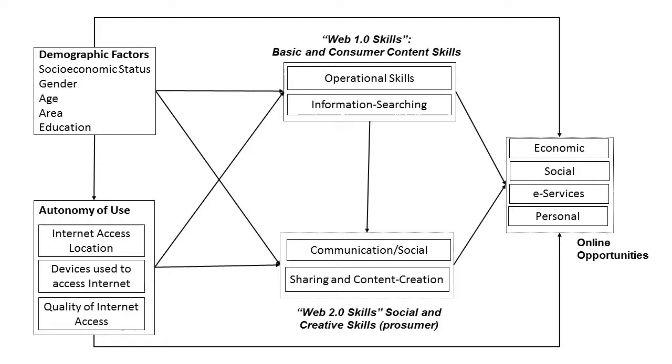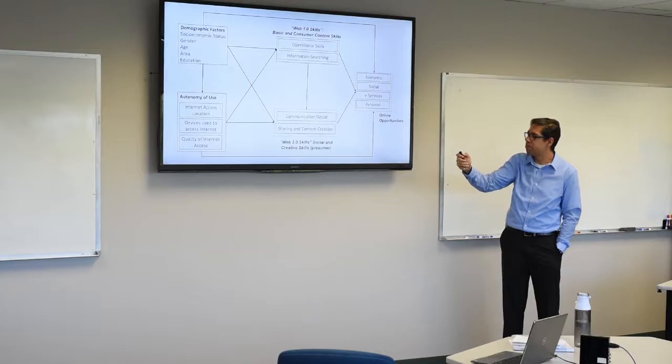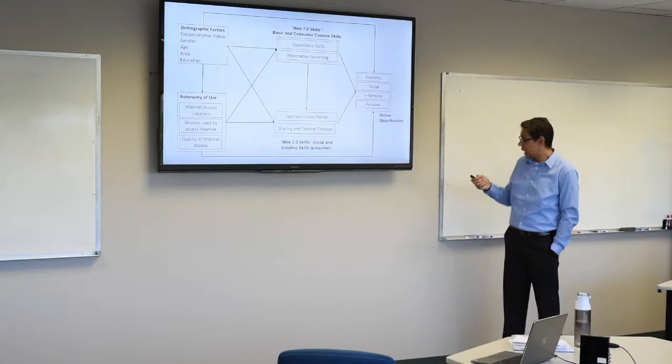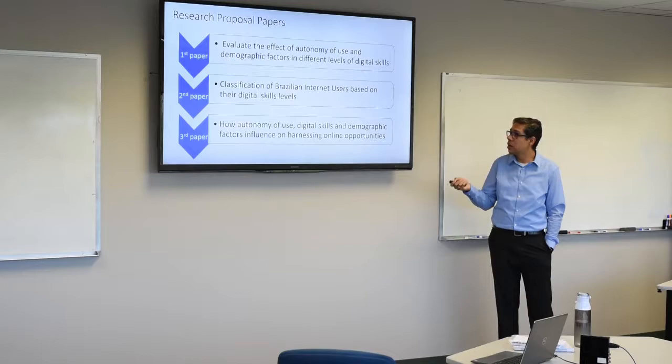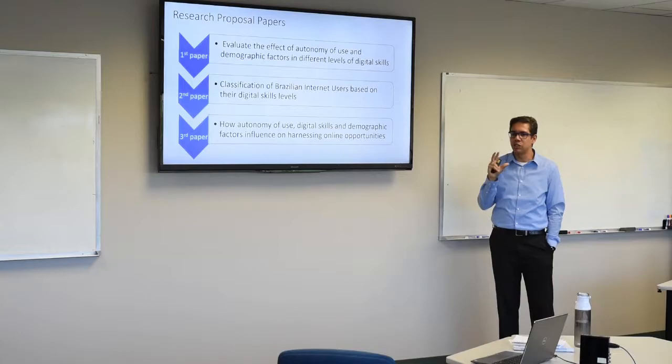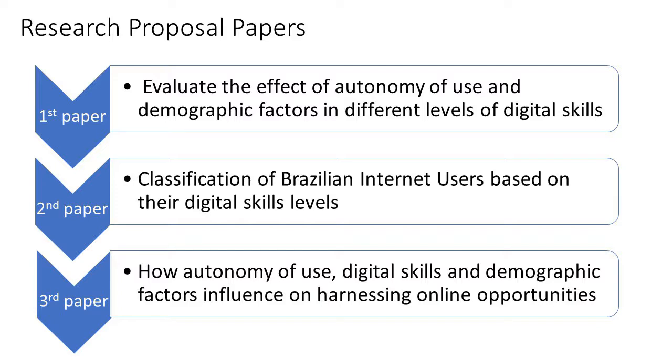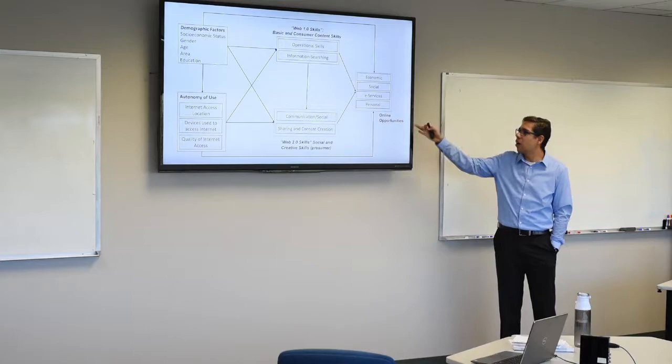I just finish. I opted for a three research papers approach. The first paper is evaluating the effect of autonomous use and demographic factors in developing internet skills. In other words, we evaluate the first part of this model. The second paper, we evaluate the classification of Brazilian internet users, proposing the classification of Brazilian internet users based on their internet skills. The second paper, I have the first version of this paper, I will present the results in a conference in New Orleans in August. But we changed a lot. The paper is still different now. And maybe after, I can show what we find in results. In the third paper, we evaluate all the changes. How the condition of access, demographic factors, digital skills will impact and what's important in the online opportunities.